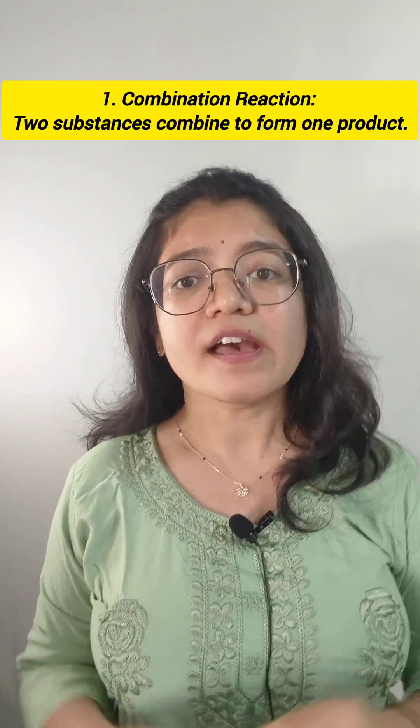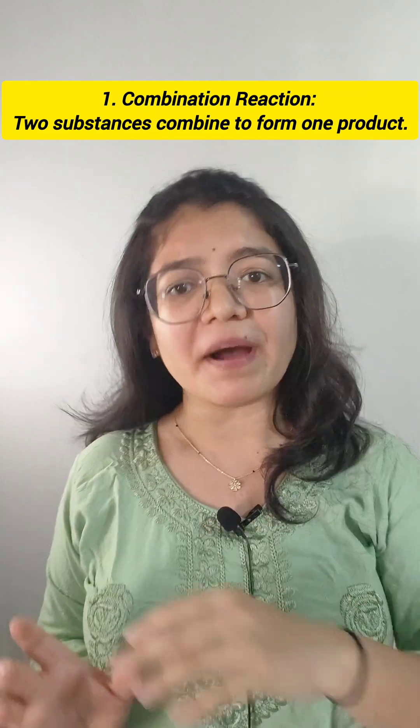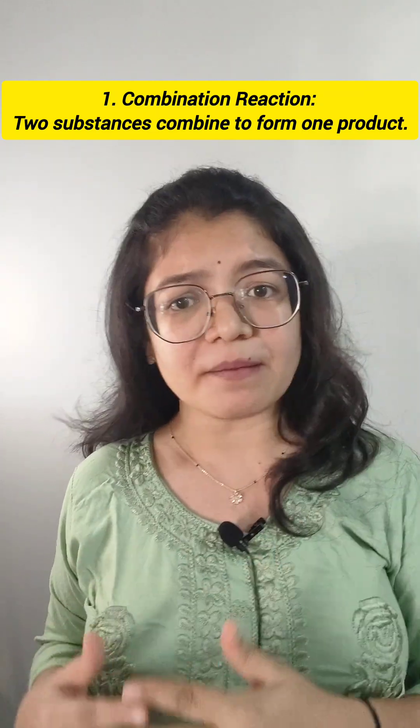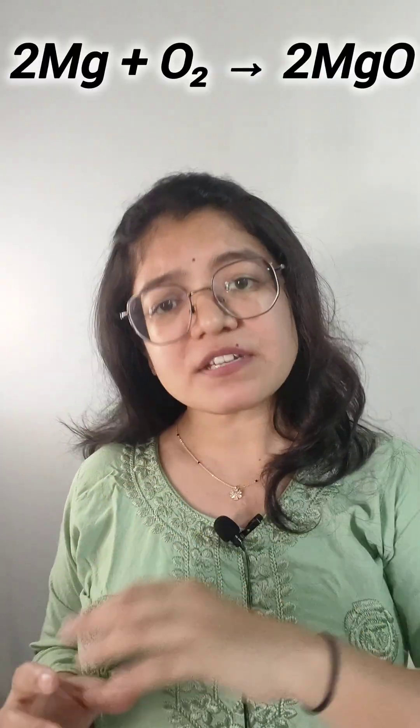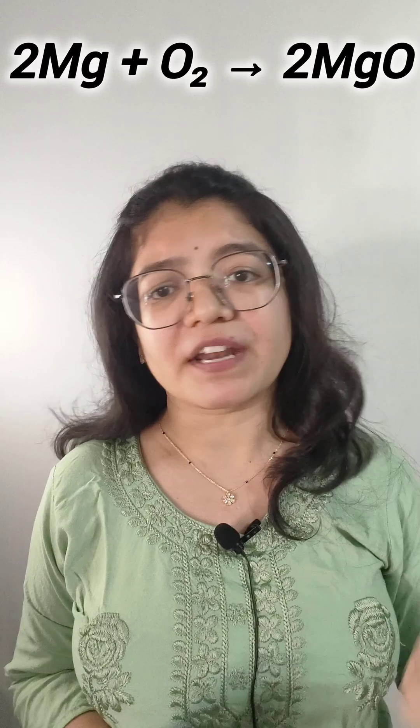First is combination reaction. In this reaction, two substances combine to form one product. For example, when magnesium burns with oxygen, it forms magnesium oxide.